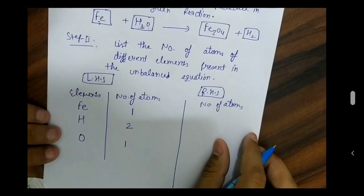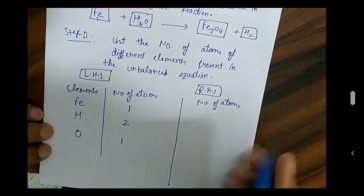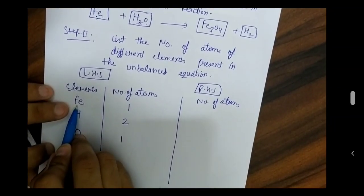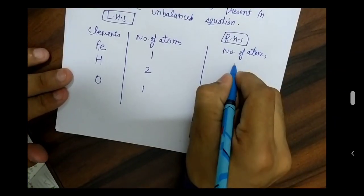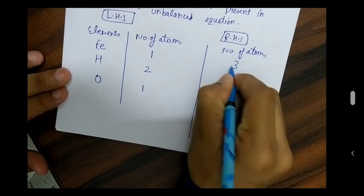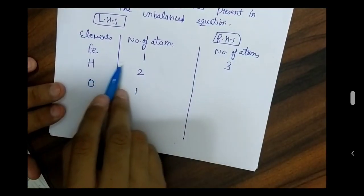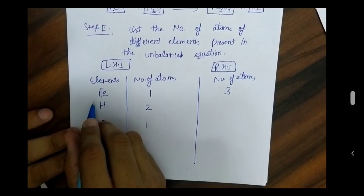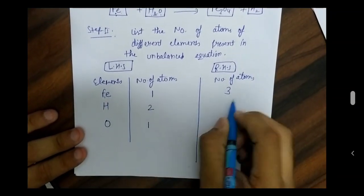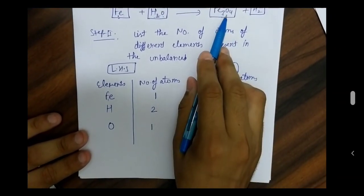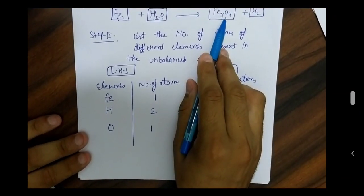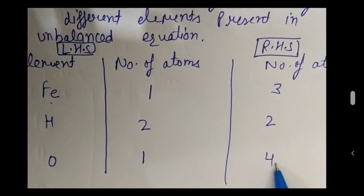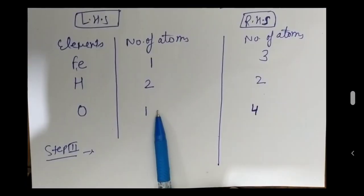On the left hand side, the number of atoms of iron is 1. The number of atoms of hydrogen on the right hand side is 2, and the number of atoms of oxygen on the right hand side is 4. We use this table to apply the hit and trial method.